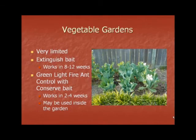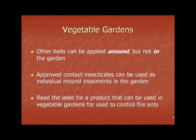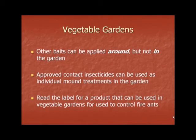In vegetable gardens, you are very limited with products to use. Extinguish bait works within 8 to 12 weeks and is labeled for use inside vegetable gardens. Green Light Fire Ant Control with Conserve bait works within 2 to 4 weeks and can also be used inside a vegetable garden — this product contains the active ingredient spinosad, which is considered organic. Other baits can be applied around vegetable gardens but not in the garden. Approved contact insecticides can be used as individual mound treatments inside the garden. Always read the label for a product that can be used in vegetable gardens.